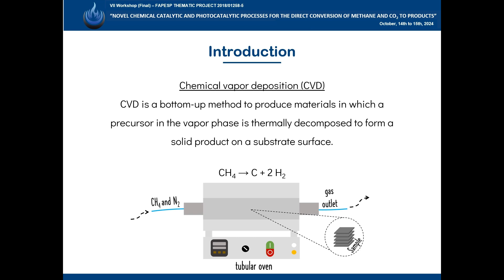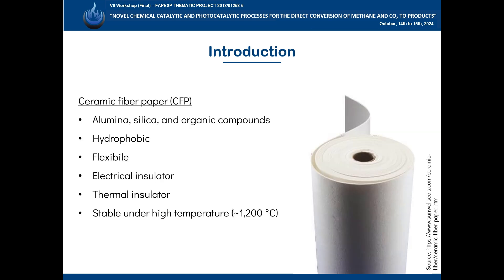One interesting characteristic of this method is the possibility to use different substrates for carbon deposition, including metals, semiconductors, and ceramics. For example, we can use ceramic fiber paper, or CFP, which is flexible, stable under high temperatures, and easy to handle.